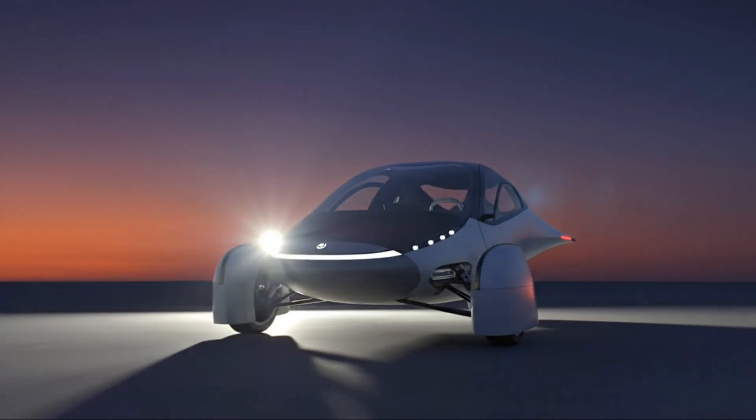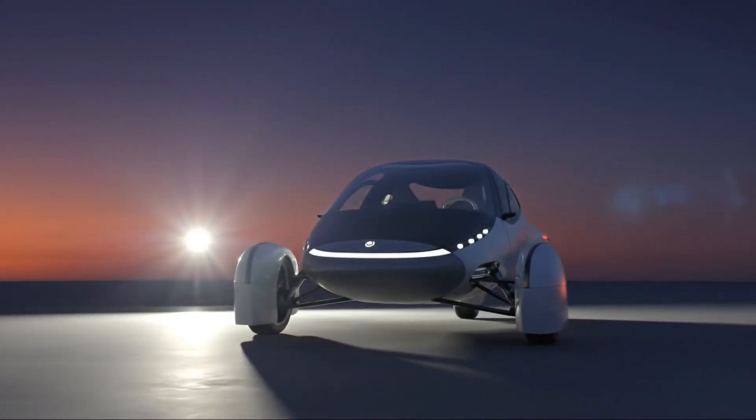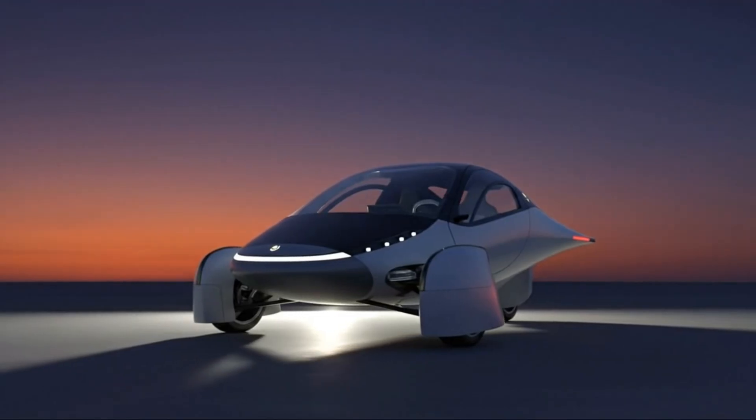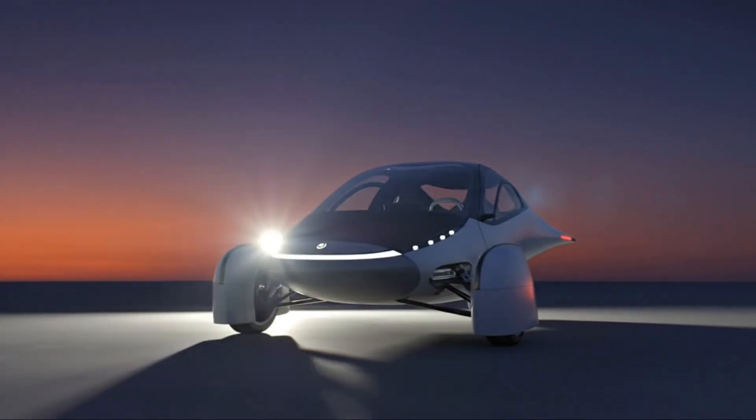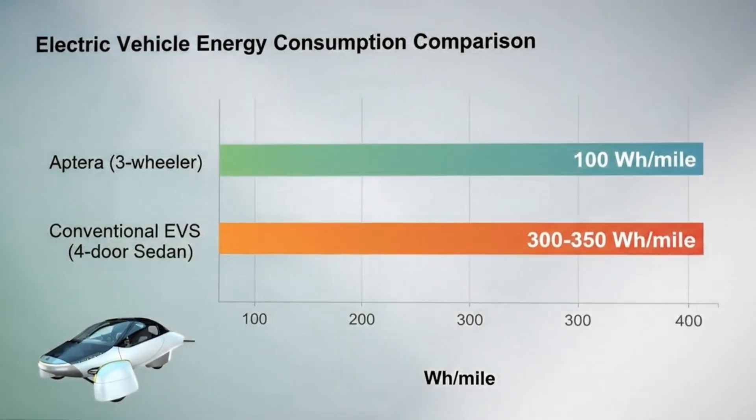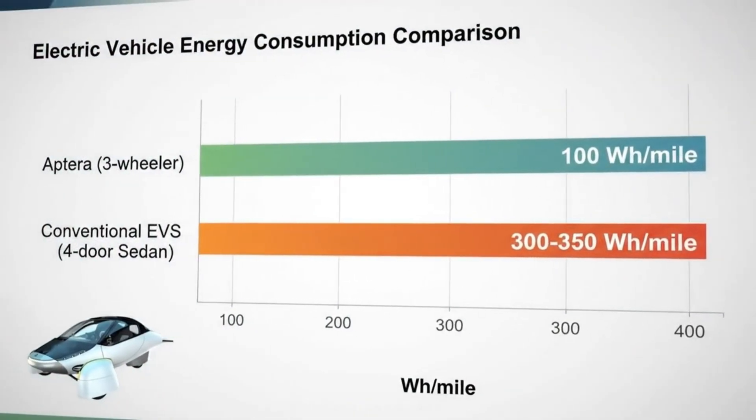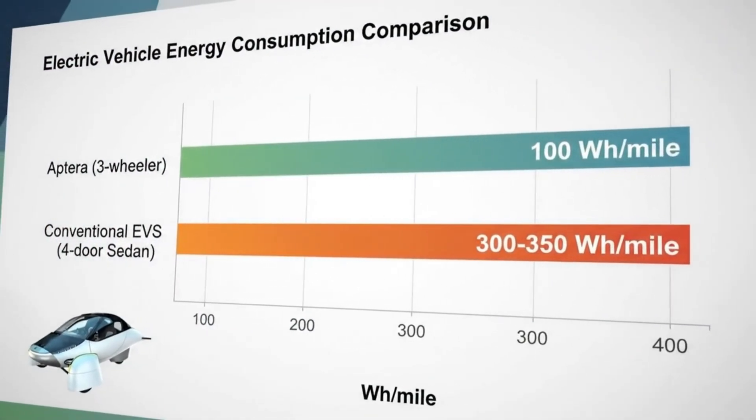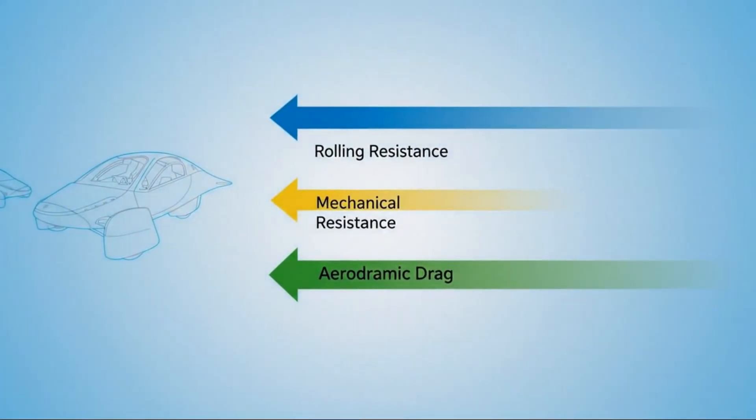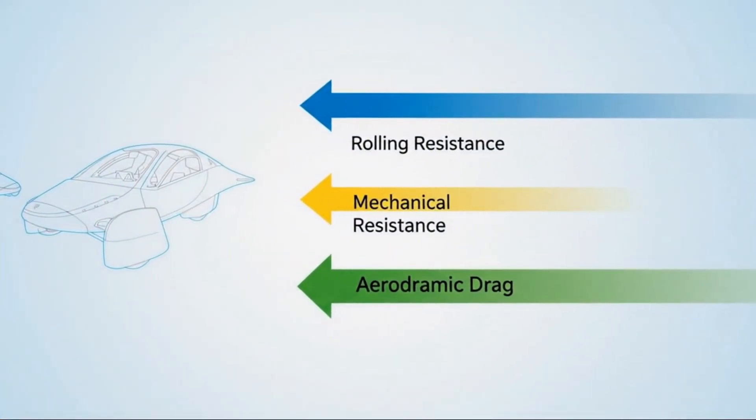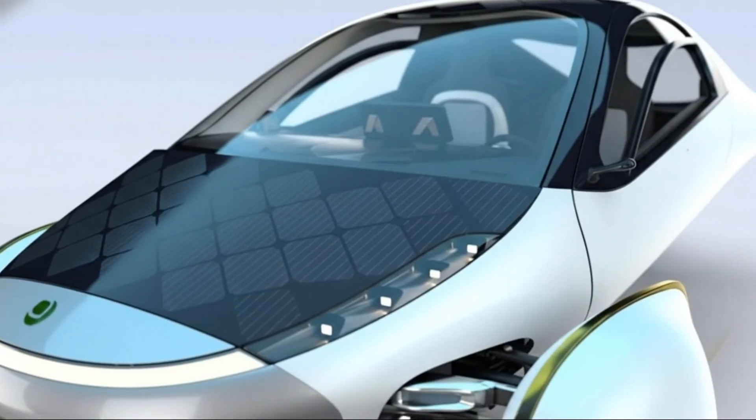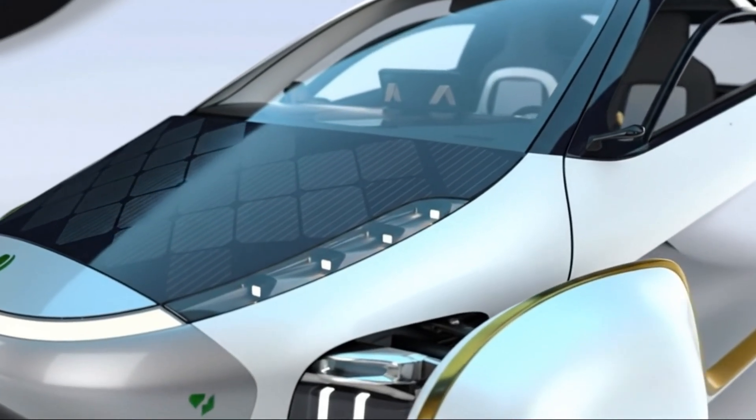If this vehicle reaches mass production, it won't just offer impressive range. It will redefine what efficiency means in personal transportation. A car that rarely needs charging. A road trip vehicle capable of crossing states without stopping. A design that proves radical efficiency isn't a compromise, but a new standard. The real question is no longer whether the numbers add up. The question is how quickly the rest of the automotive world will be forced to catch up.